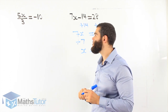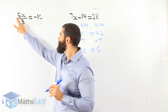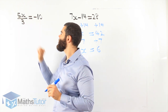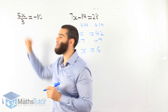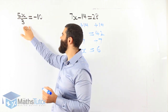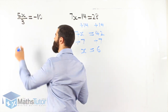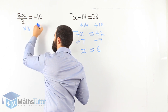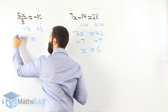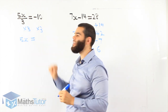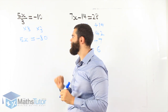Last one: 5x over 3 equals negative 10. This seems a little different because we have a fraction, but it's still a two-step equation. We have two numerals next to the x on the left-hand side. Which one do we start with first — the 3 or the 5? The furthest one away — the one downstairs, the 3. A fraction means divide, so the opposite is times 3. Times 3 on the other side too. Divide by 3 and times 3 cancel each other out, leaving 5x. Negative 10 times 3 is negative 30, so 5x equals negative 30.